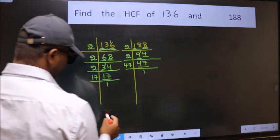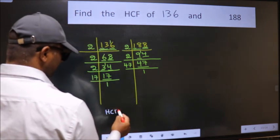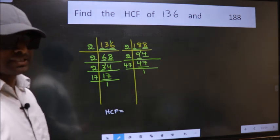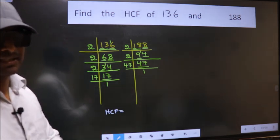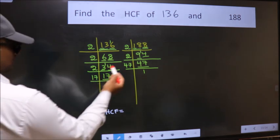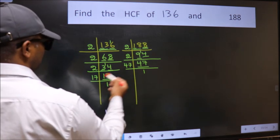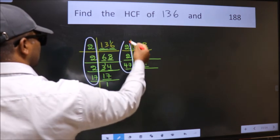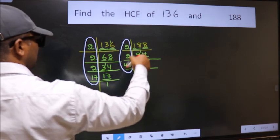Therefore, our HCF is the product of the numbers which should be present in these 2 places, that is here and also here, here and here.